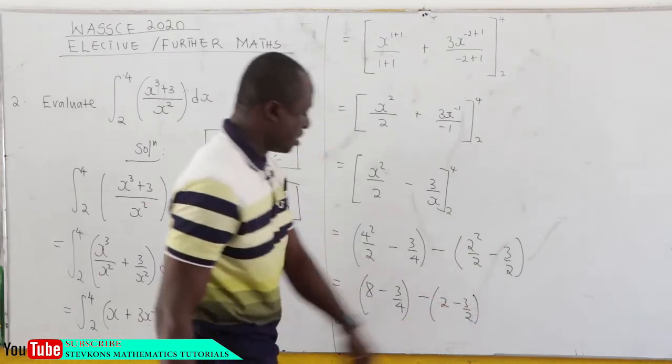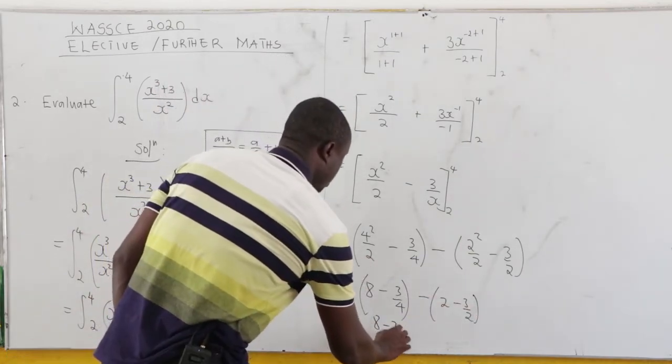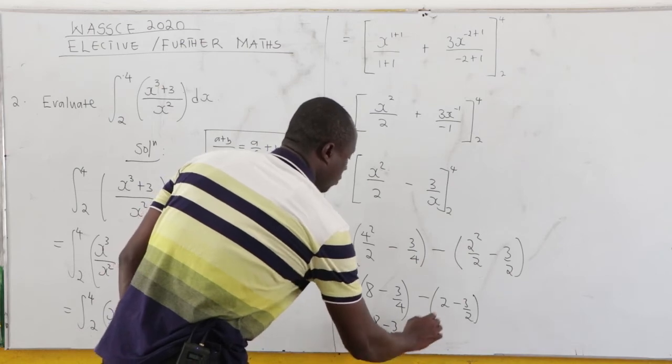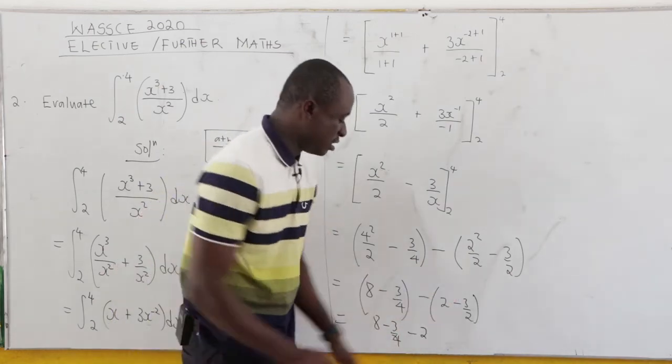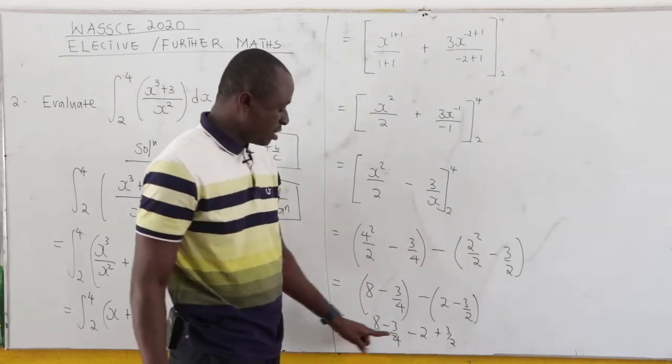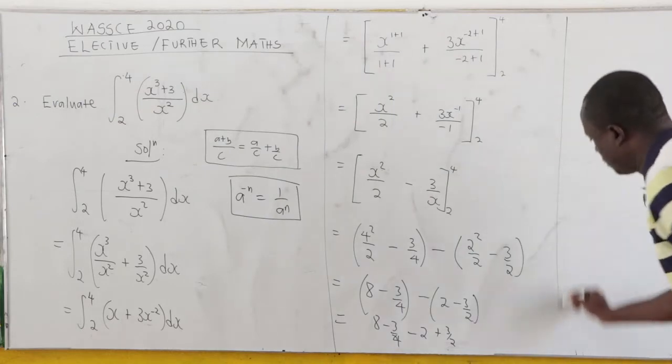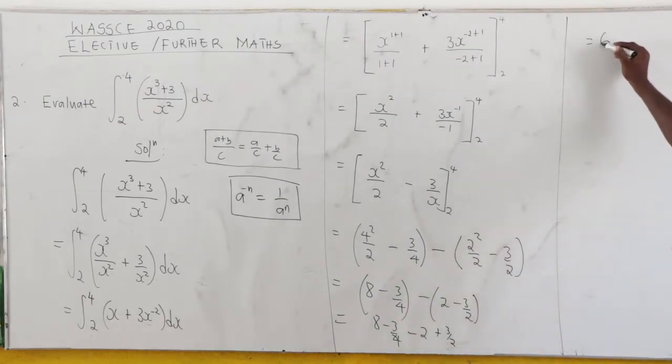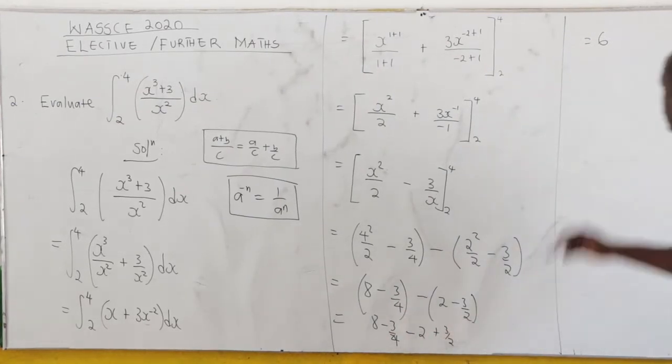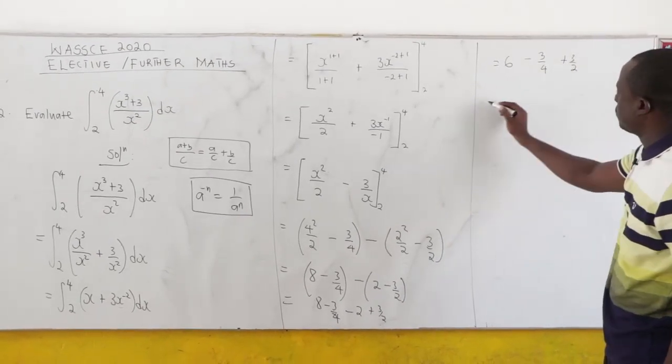Now let's simplify this. Let's multiply through the negatives. So you have 8 minus 3 over 4 minus 2. Now it's a negative, so plus 3 all over 2. 8 minus 2 is giving us 6. So we have 6 minus 3 over 4 plus 3 over 2.